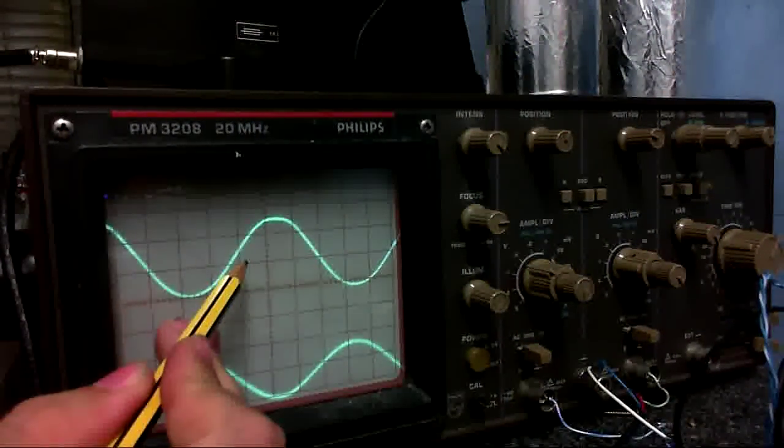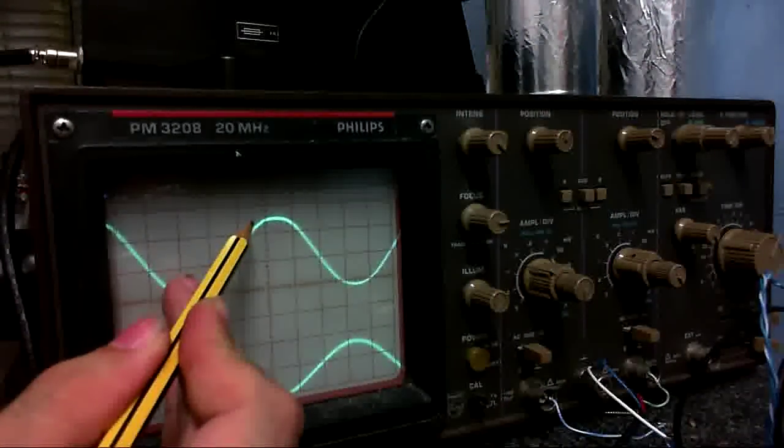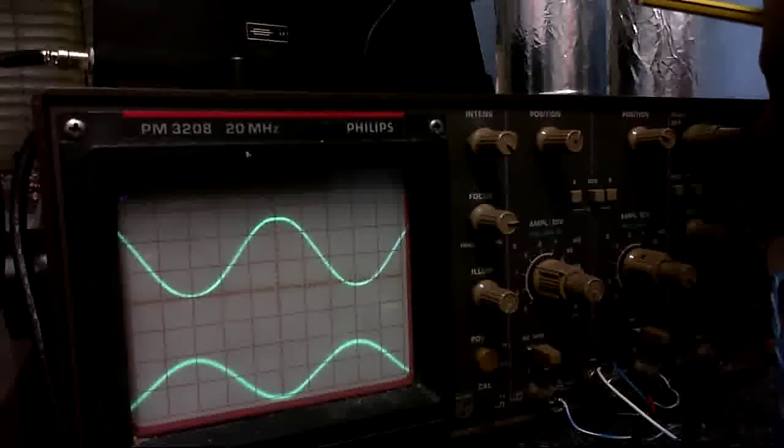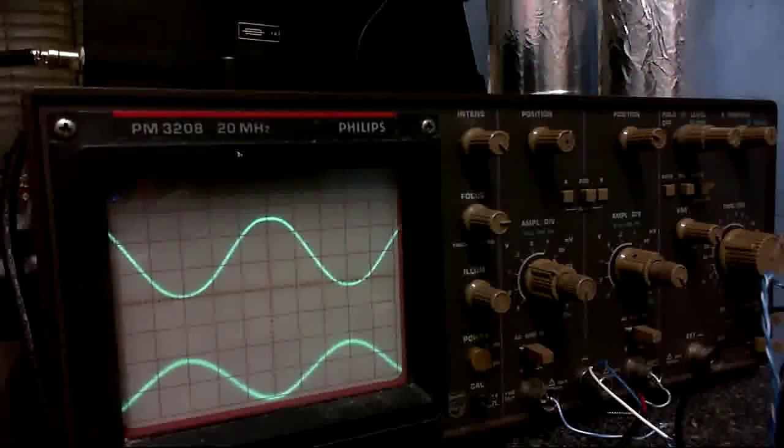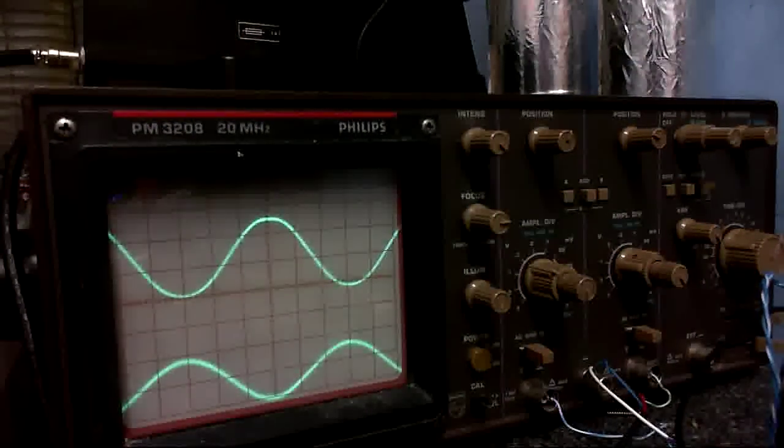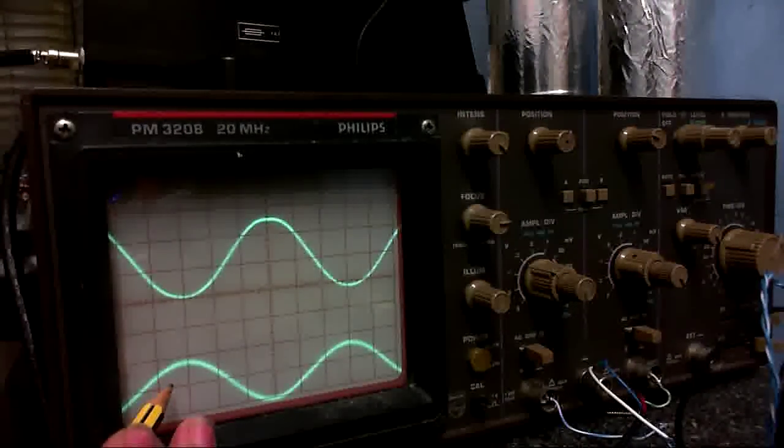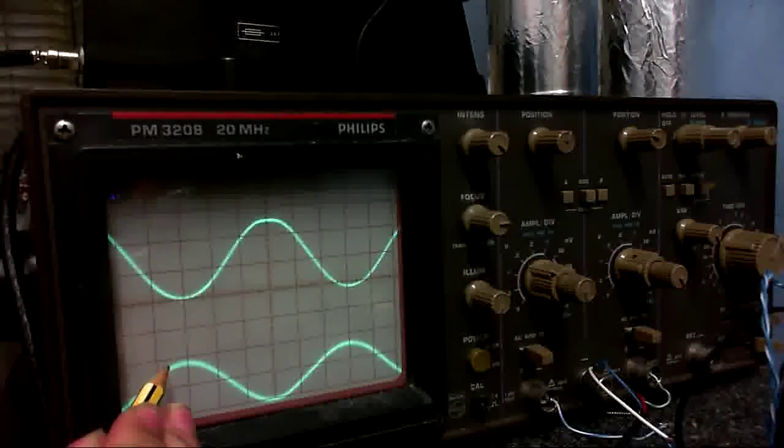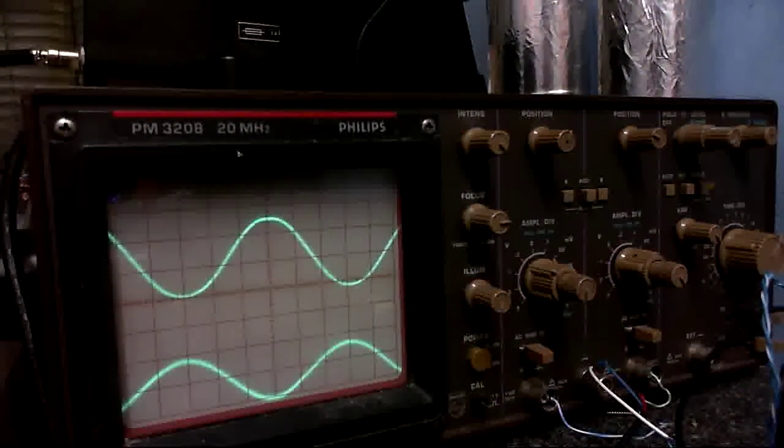So this one is set on the 0.5 volts per division. So that's 0.5, 1, 1.1, 1.2. Let me just center that a little better. About 1.25 volts peak to peak, so remember that. And the bottom trace is set to 10 millivolts per division. So that's 10, that would be 20. It's not quite 20. I'd say that's about 18 millivolts.